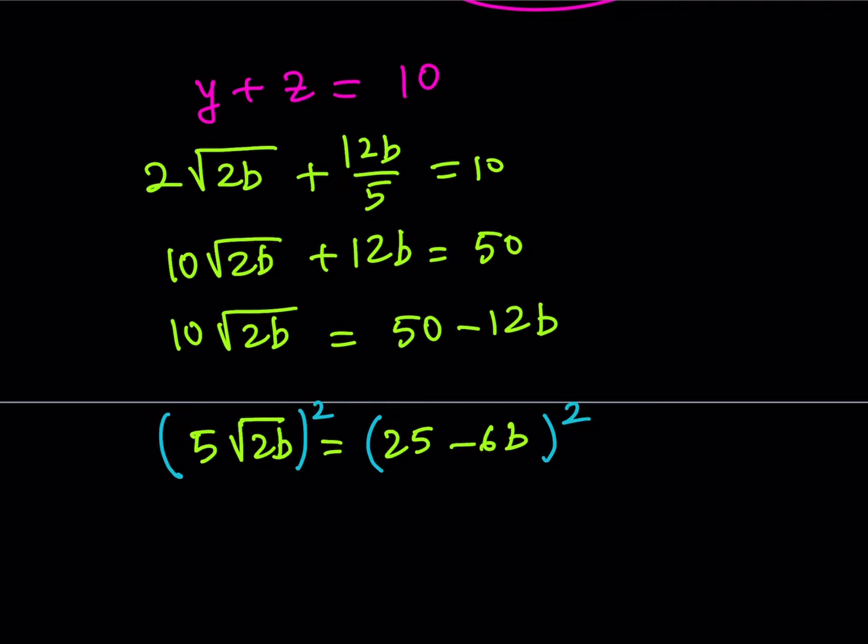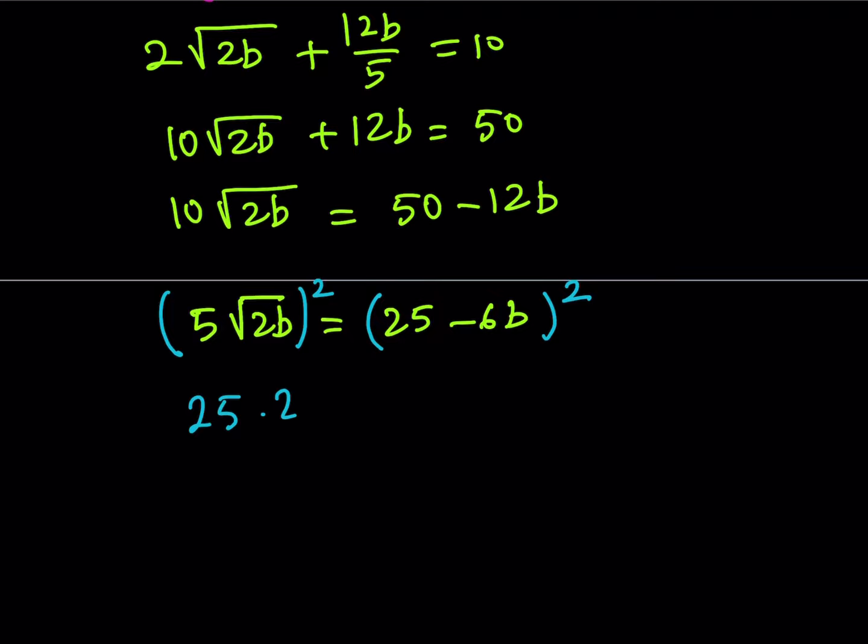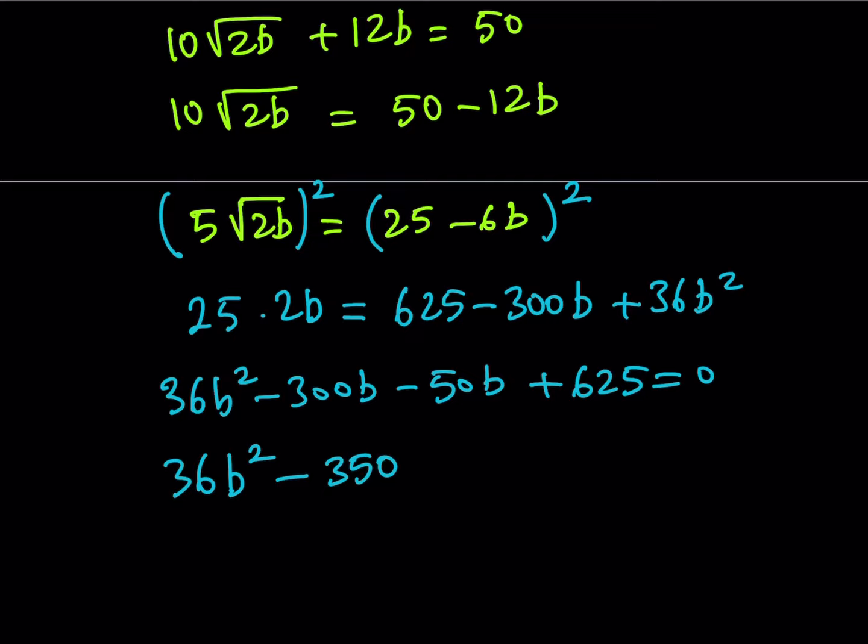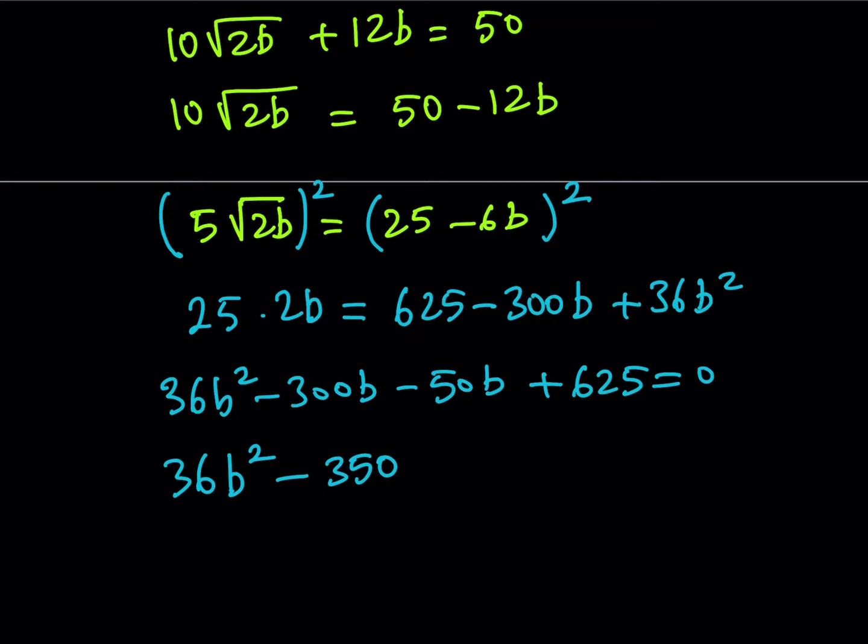Now, when you square both sides, what happens? Well, good things happen because you'll get rid of the radical and hopefully you can solve for b from here. We already know a, so we're going to solve for b. Let's square both sides. So, 5 times 25 times 2b is equal to 625 minus 6 times 25 is 150. If you double that, you get 300b, plus 36b². Let's put everything on the right-hand side. 36b² minus 300b - 50b is plus 625 is equal to 0.